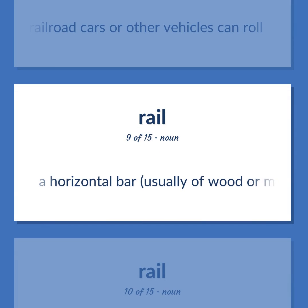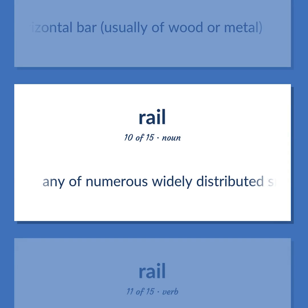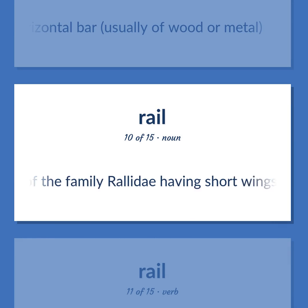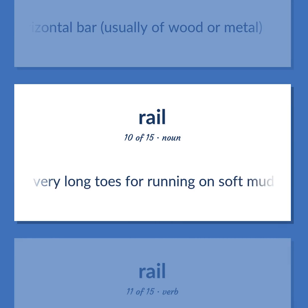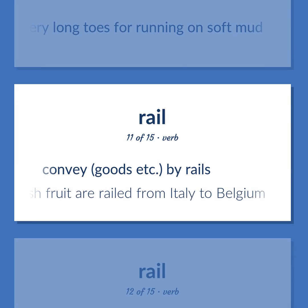Rail: A horizontal bar, usually of wood or metal. Any of numerous widely distributed small wading birds of the family Rallidae, having short wings and very long toes for running on soft mud. Convey goods by rails — fresh fruit are railed from Italy to Belgium.